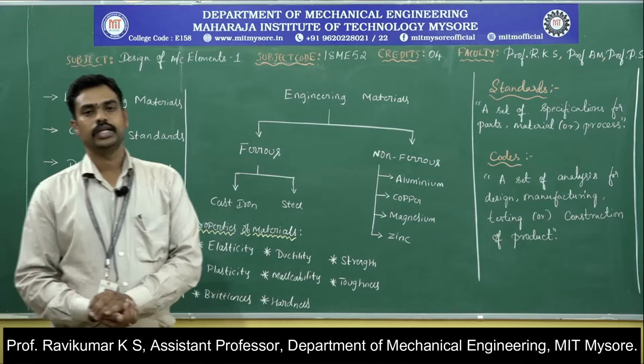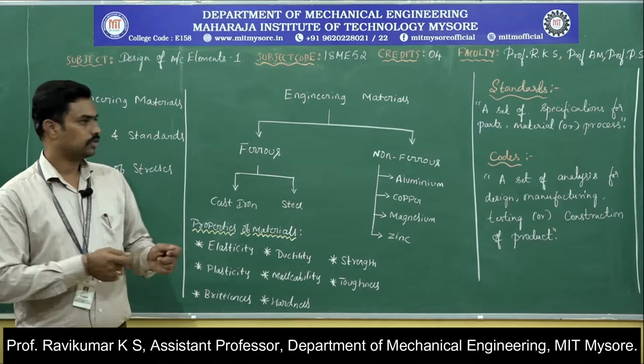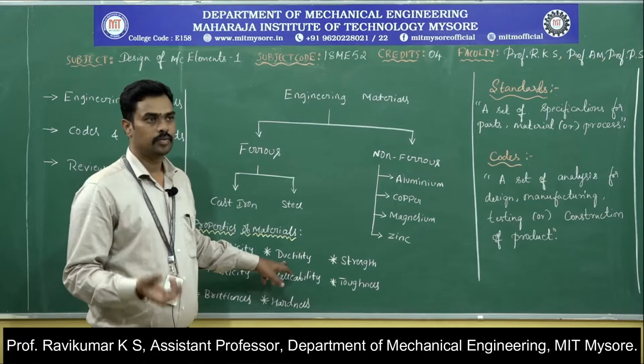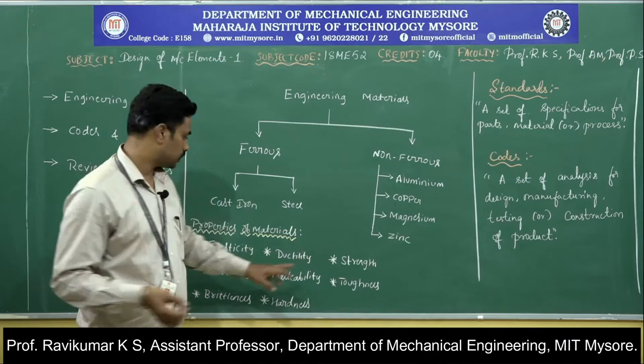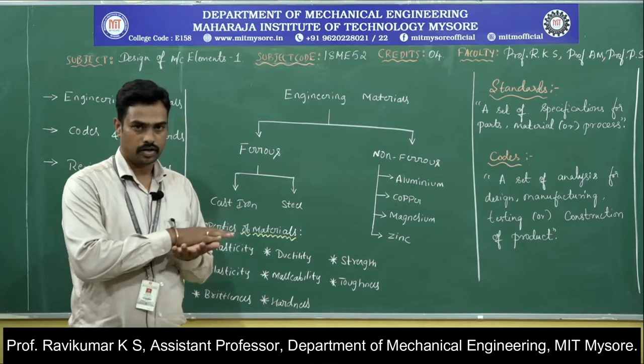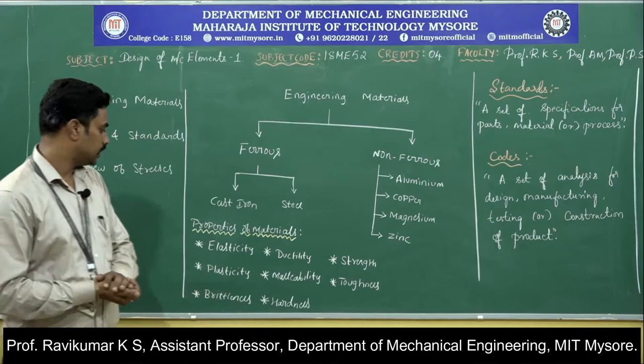Ductility is the ability of a material to elongate more, or the property by virtue of which it can be drawn into thin wires. Malleability is the property by virtue of which a material can be drawn out into thin sheets.